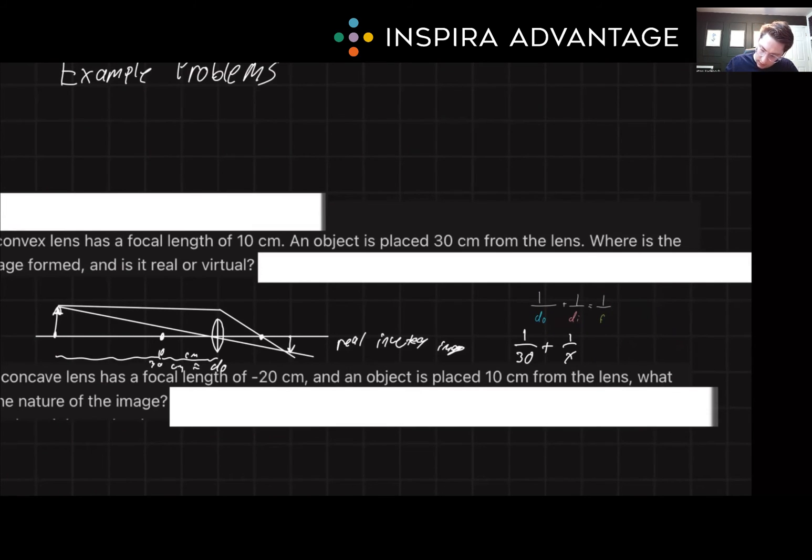And we know our focal length is 10. Solving for x, we figure out that x is 15, which makes sense. So then we know that the image is 15 centimeters away. Nice.